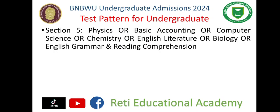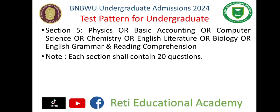Section 5 is the optional section — you must attempt it, but the subjects are optional: Physics, Basic Accounting, Computer Science, Chemistry, English Literature, Biology, or English Grammar and Reading Comprehension. Each section contains 20 questions. Sample test papers for all these sections have already been uploaded — visit the Arati Educational Academy playlist and the Begum Nusrat Bhutto Women University Sukkur playlist.